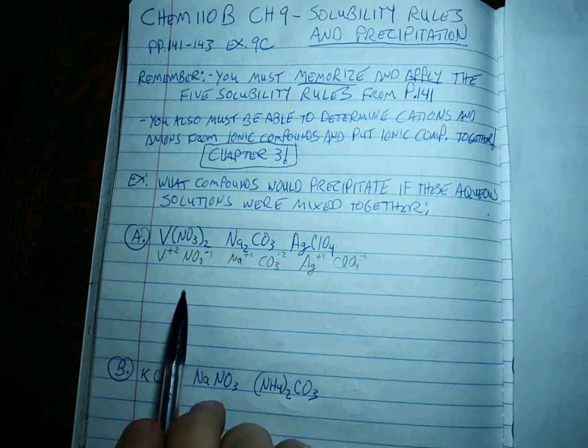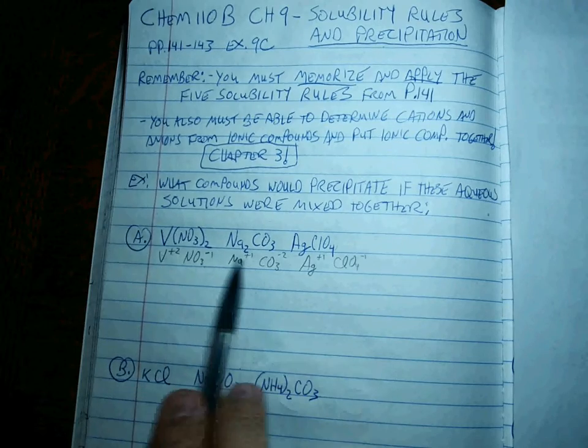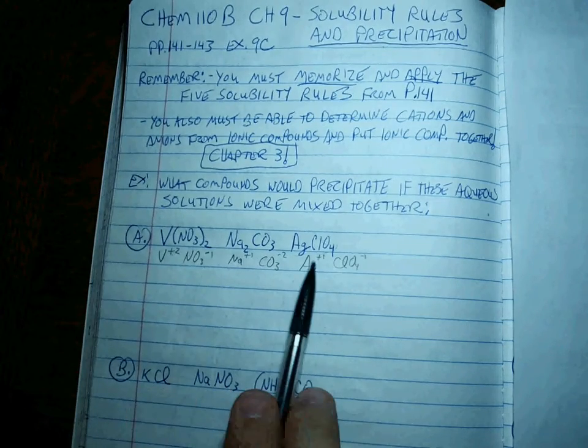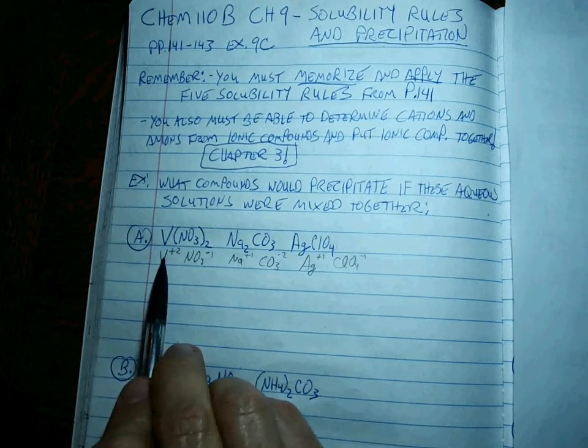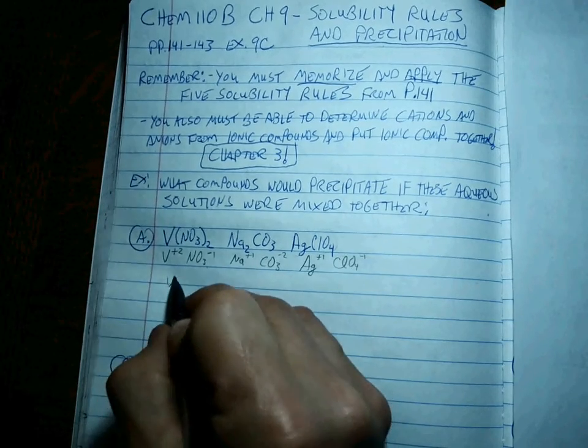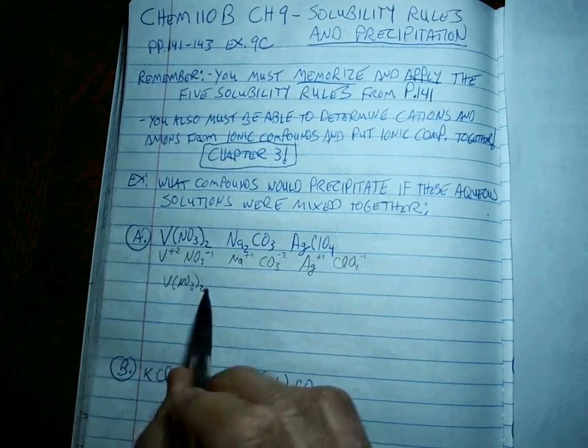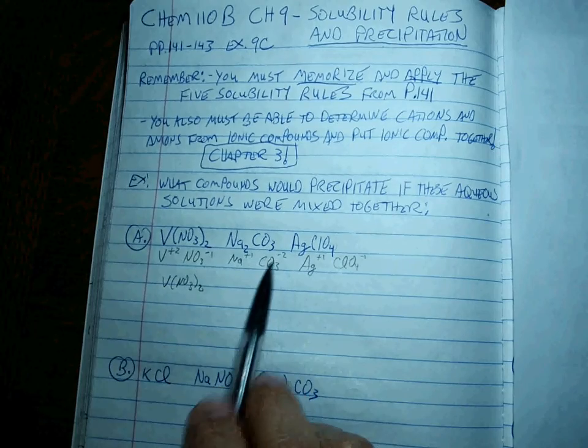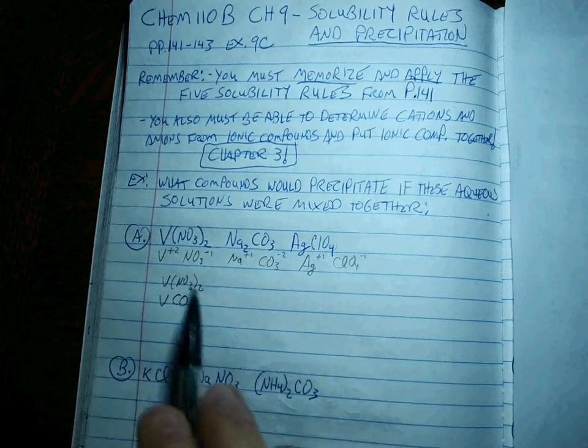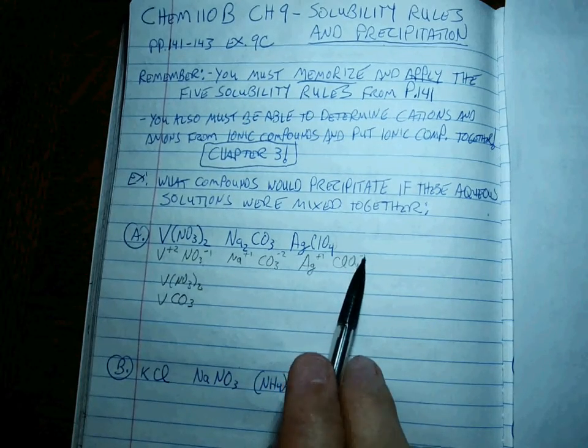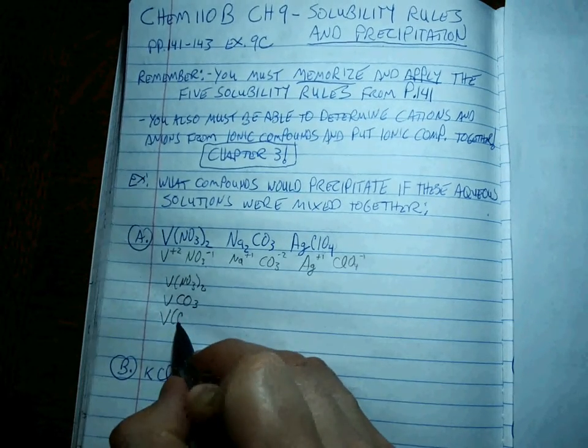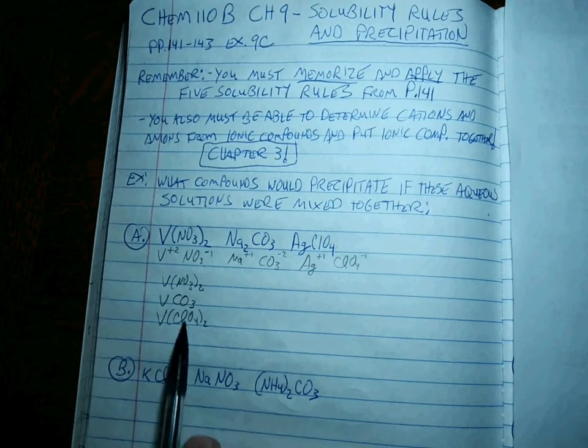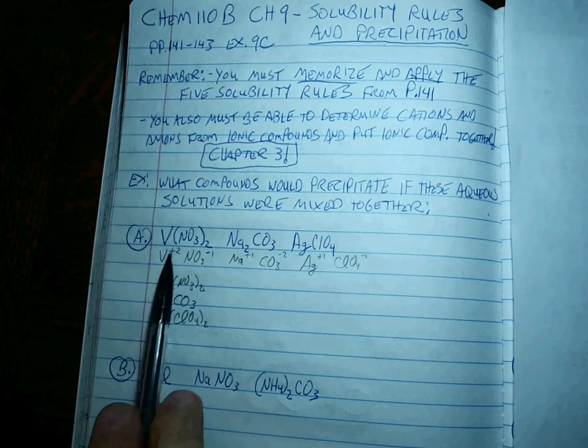Okay, so what do we do? To get all the different possible combinations, we put the cation with each different anion. So V plus 2 plus NO3 minus 1 makes V(NO3)2. The vanadium with the carbonate plus 2 with a minus 2 makes VCO3. Vanadium plus 2 with ClO4 minus 1, two of them. It's just like with the NO3 minus 1. Same ratio. Those are all the possibilities if vanadium plus 2 is the cation.